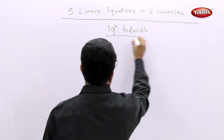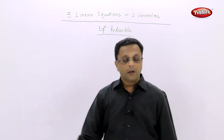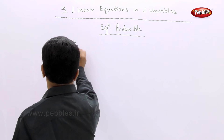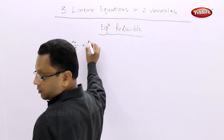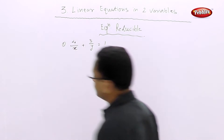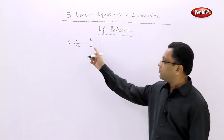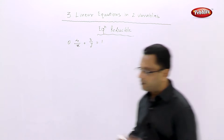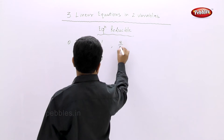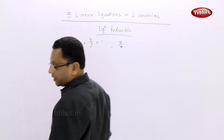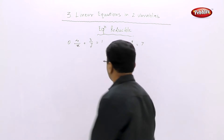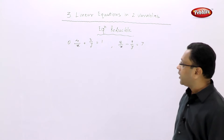Equations reducible — that is the topic we are going to see. Now let us see some examples. The first equation is 4 upon x plus 3 upon y is equal to 1, and the second equation is 8 upon x minus 9 upon y is equal to 7. Now if you simply solve this, what will happen?